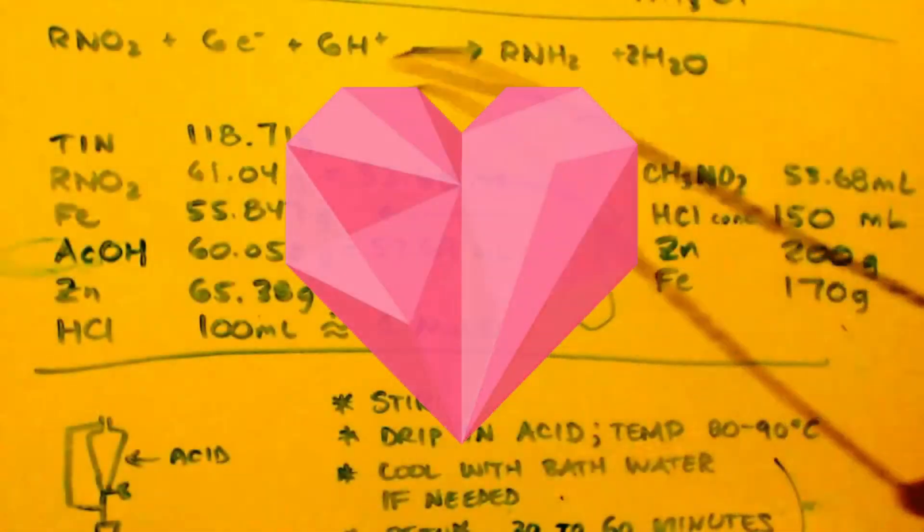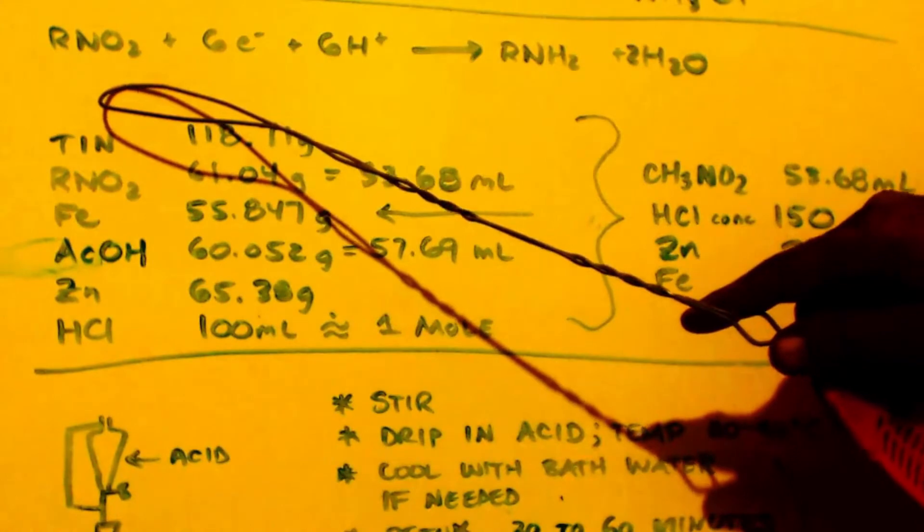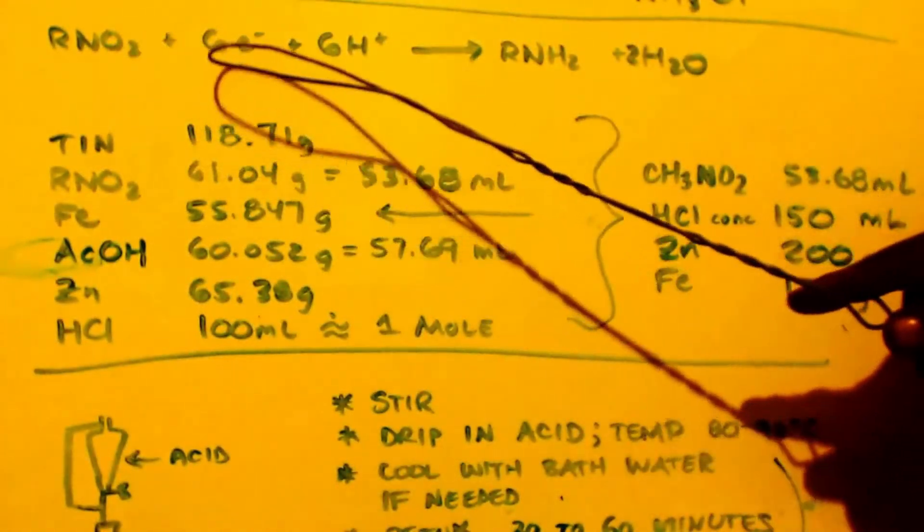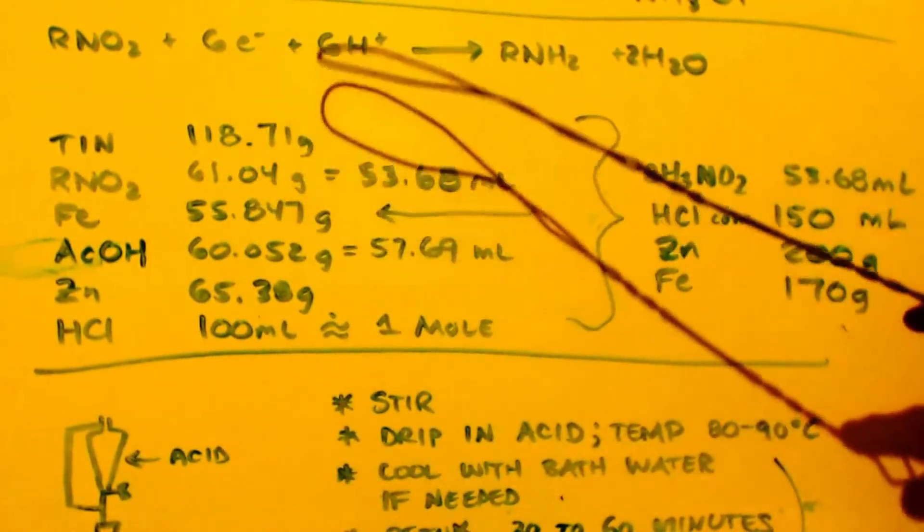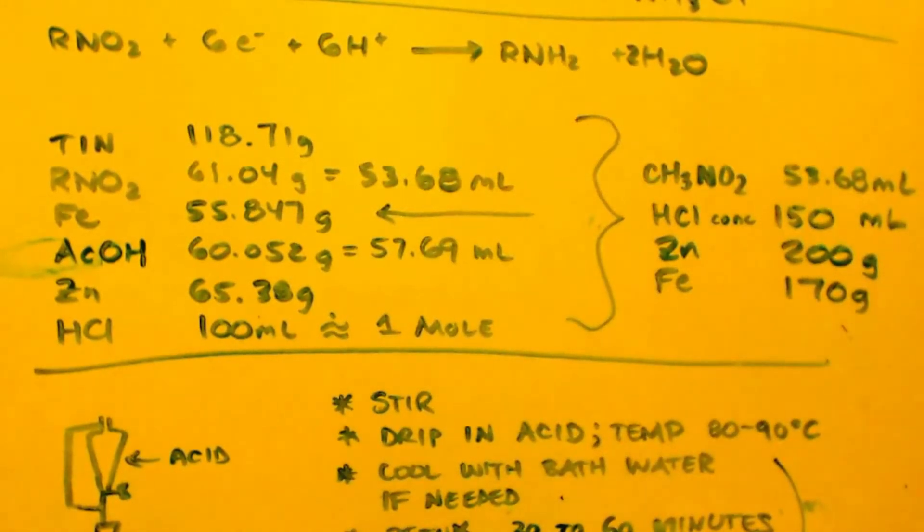Okay, so here's the equation for it. You got your one mole of nitro group, one mole of nitro compound, six electrons, six protons, and you make your methylamine in two waters.